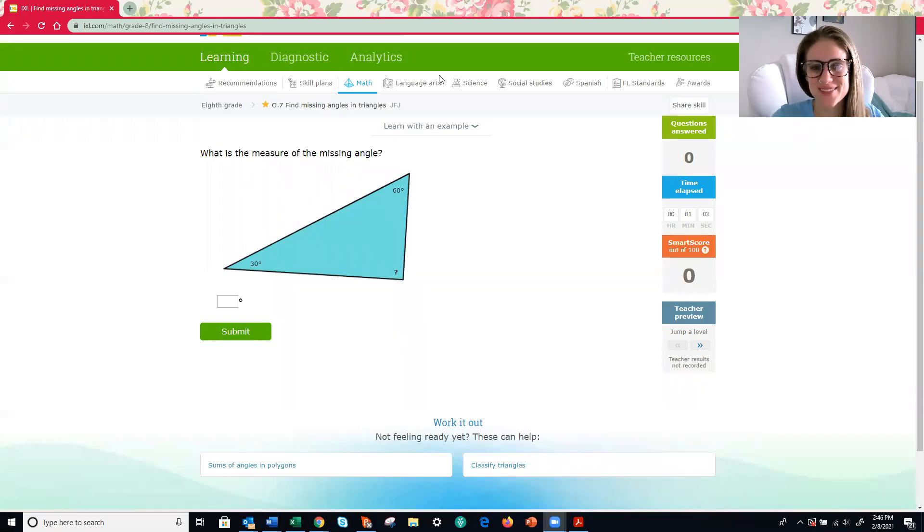Hey guys, how's it going? We got another iXL video here. This one covers 07, find missing angles in triangles. Before we begin, the first thing that we need to know is how many degrees does the inside of a triangle always equal? What do you remember from class? 180 degrees. So when we're talking about the inside angles of a triangle, they will always, always, always add up to 180 degrees.